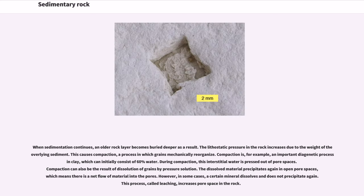When sedimentation continues, an older rock layer becomes buried deeper as a result. The lithostatic pressure in the rock increases due to the weight of the overlying sediment. This causes compaction, a process in which grains mechanically reorganize. Compaction is an important diagenetic process in clay, which can initially consist of 60% water. During compaction, this interstitial water is pressed out of pore spaces.